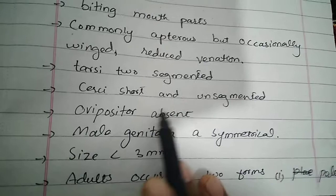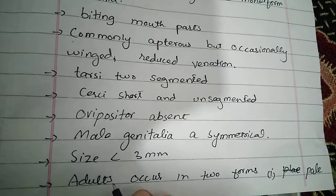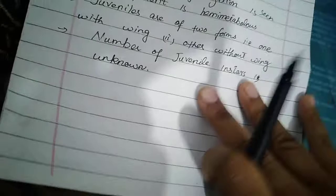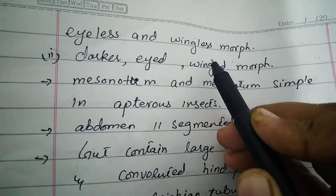Their size is less than 3 mm. Adults occur in two forms: a pale, eyeless, apterous morph and a dark-eyed, winged morph. The mesonotum and metanotum are the protective sclerites of the thorax. They are simple in apterous forms, i.e., without wings.